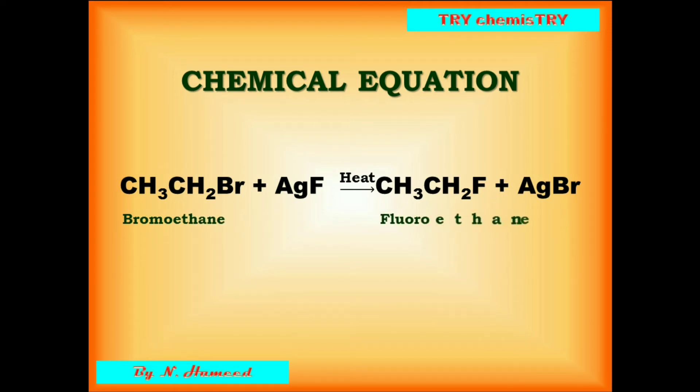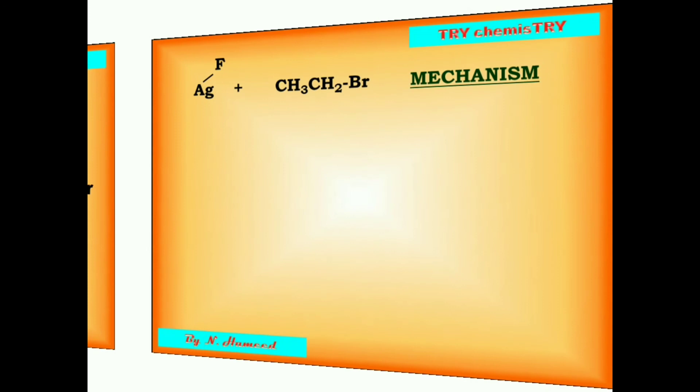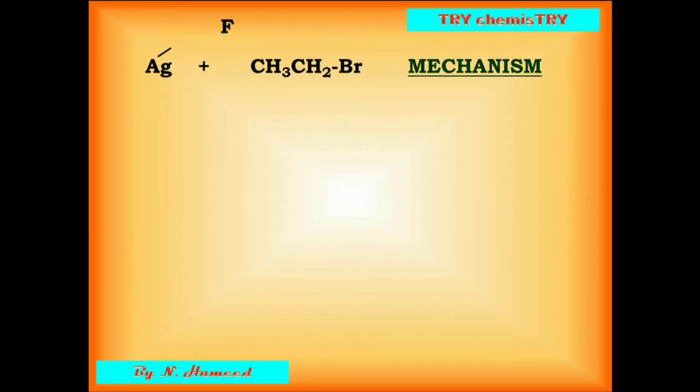Now we can discuss the mechanism of the Swarts reaction. Here, the fluorine acts as the nucleophile. The nucleophile attacks the alpha carbon present in the bromo ethane. It is an example of SN2 reaction.